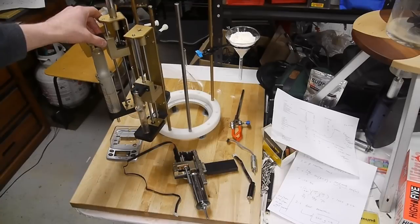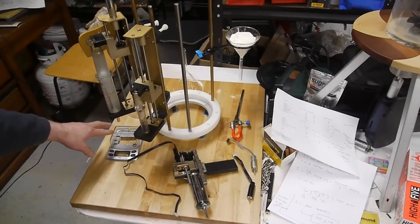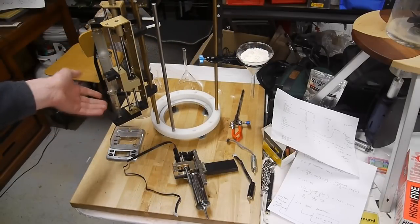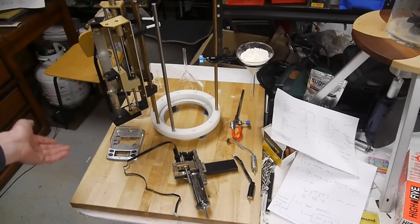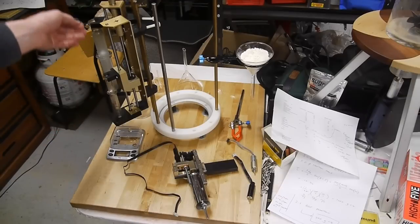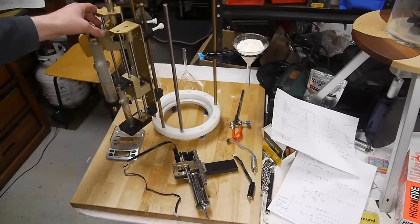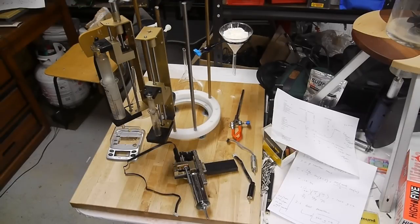What will happen is this thing will rotate into position and dispense the ingredients onto a balance, then rotate to the next position and dispense the next ingredient. The balance will be able to measure out very small quantities, so this is able to mix a single cookie.